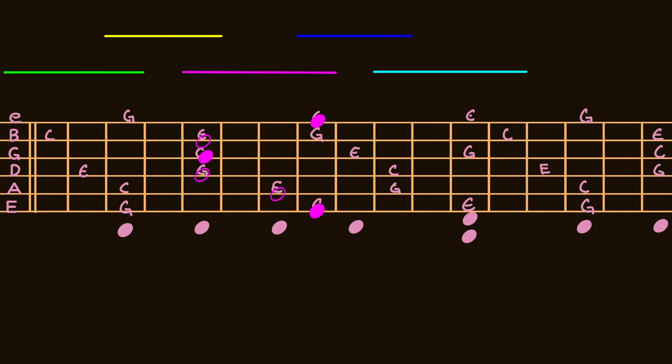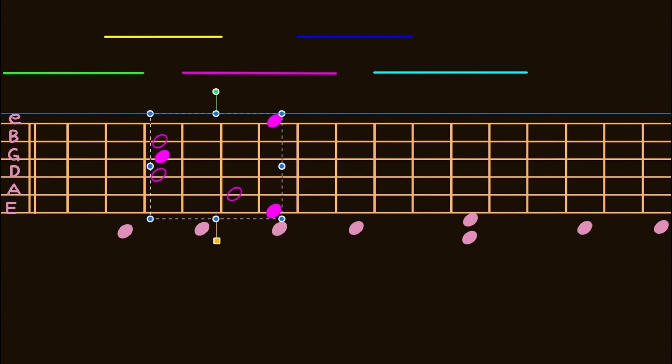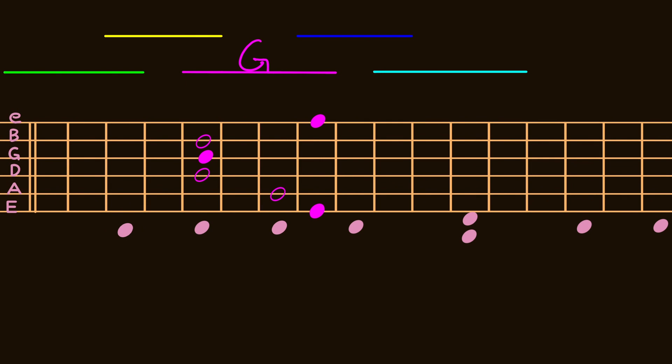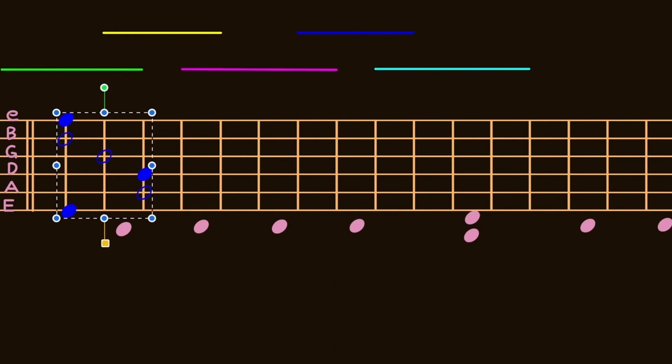If we highlight the next shape and move that one down, we can see that it looks like a G chord. We'll label that one as G and move on to the next shape. And moving that down, we can see that it starts to resemble an E chord.